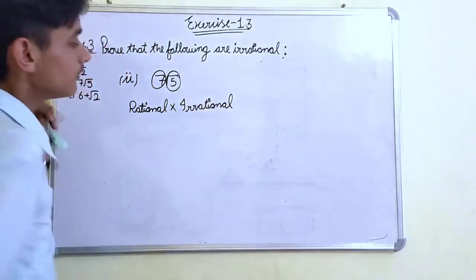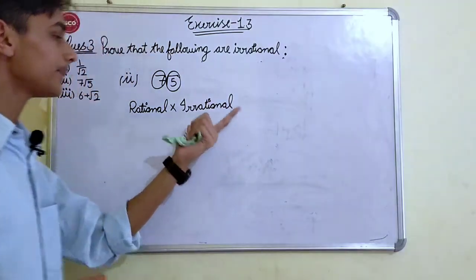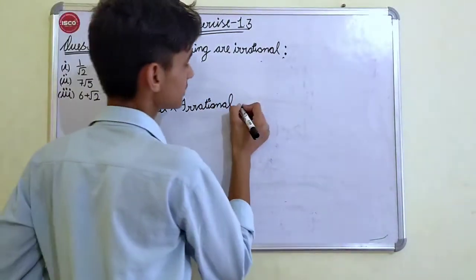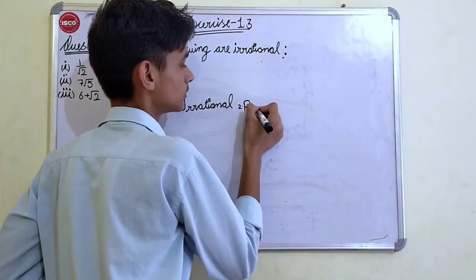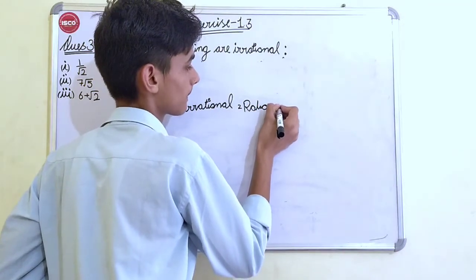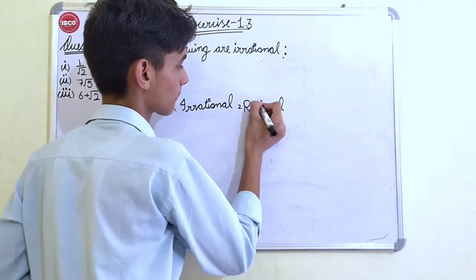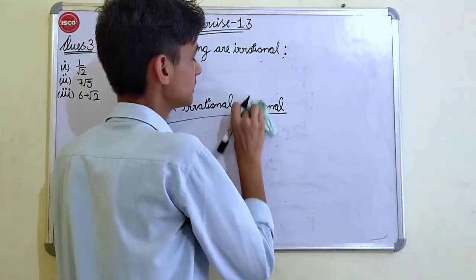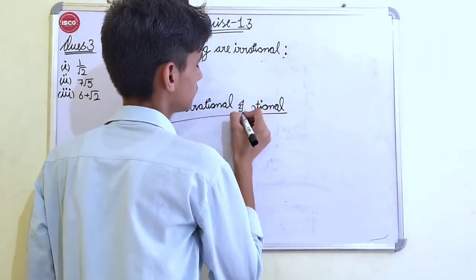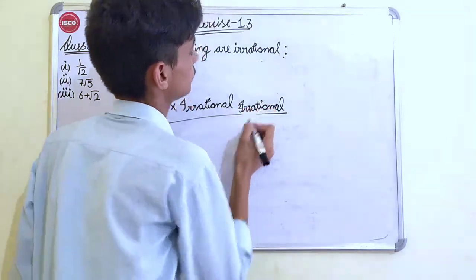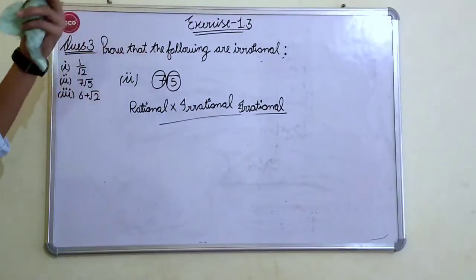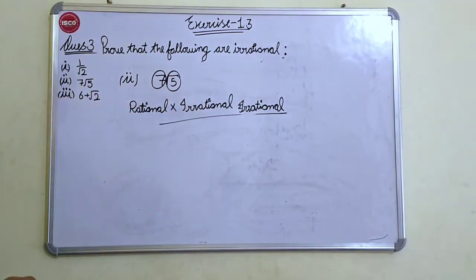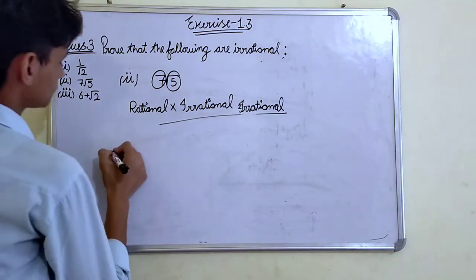And under root 5 is an irrational number. And we also know that the rational multiplied with the irrational always gives us result irrational. So we have proved that 7 root 5 is an irrational number.